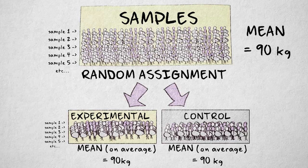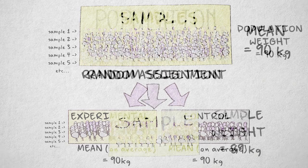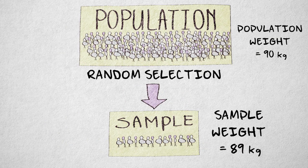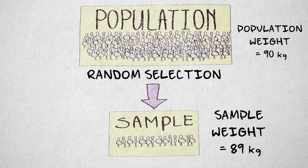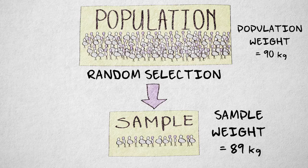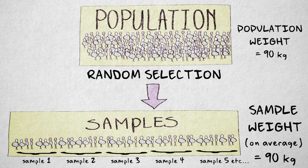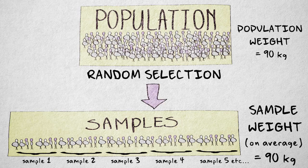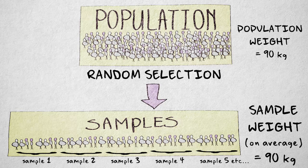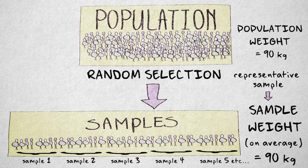The same principle can be applied not in the assignment, but in the selection of participants. We avoid a systematic difference between the sample and the population by randomly selecting elements from the population. In the long run, any specific participant characteristics will be represented in the sample proportionally to their presence in the population. We call this a representative sample.